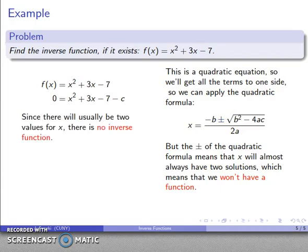And what that means is that there's going to be no inverse function. For any given value of c, I'll generally get two possible values of x, and that means I'm not going to have an inverse function. An inverse function does not exist for f of x equals x squared plus 3x minus 7.